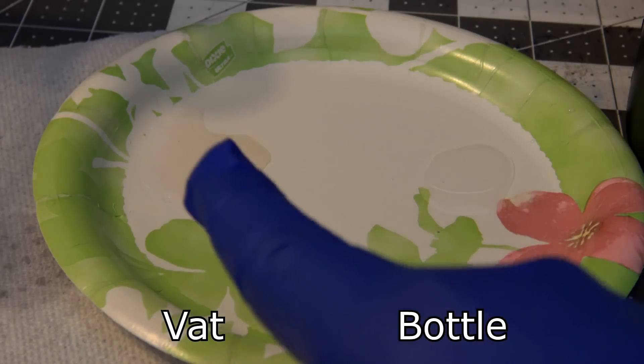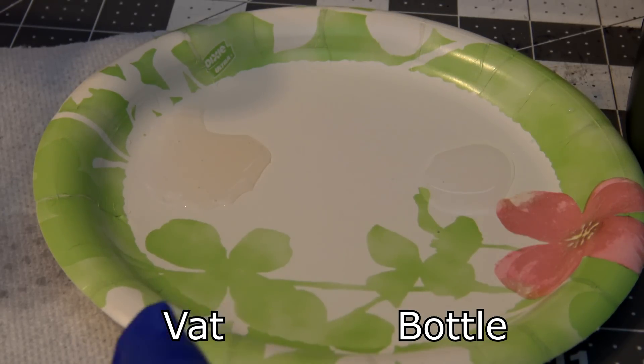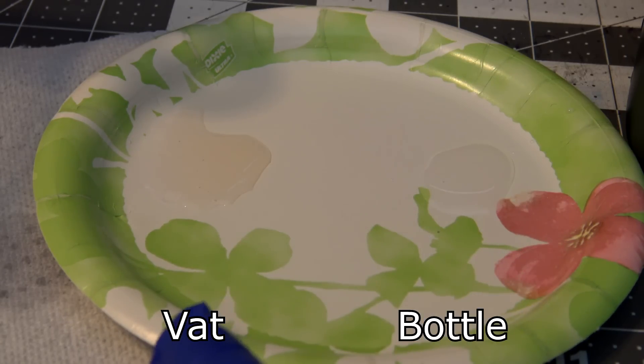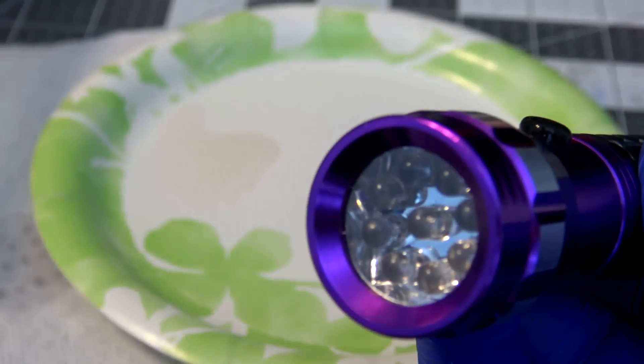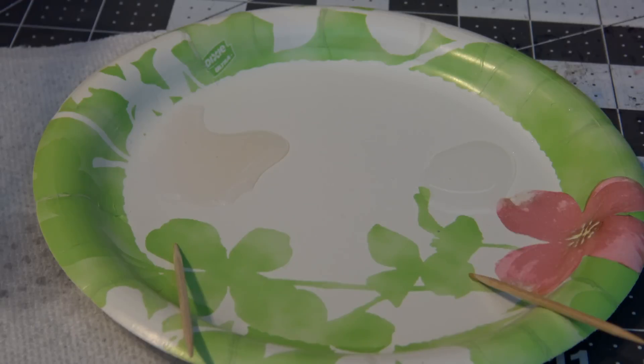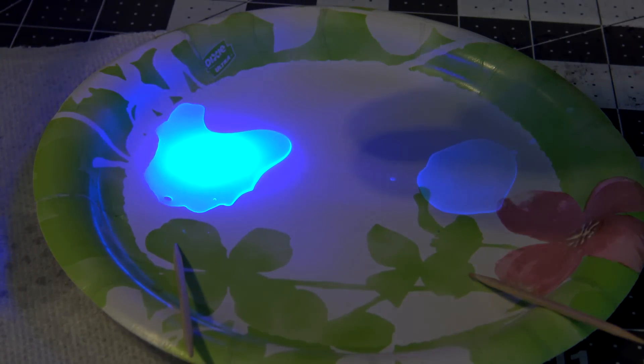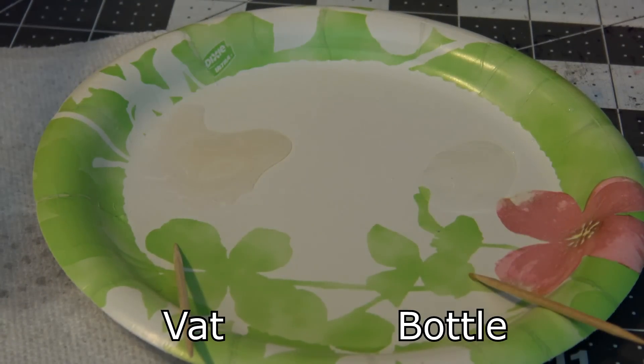So on the right, we have the resin from the bottle. And on the left, we have the resin from the vat. And just off the bat, you can tell that the vat is discolored. So while the resin in the bottle is still pretty much clear, the vat resin that's been exposed to possibly UV light and oxygen has discolored and it looks a little bit more yellow. So right off the bat, we can tell that it's definitely had an effect. So now we can test how it cures using this UV flashlight. So now I'm going to shine the light about two inches above each sample for five seconds. Okay, let's test the resin.